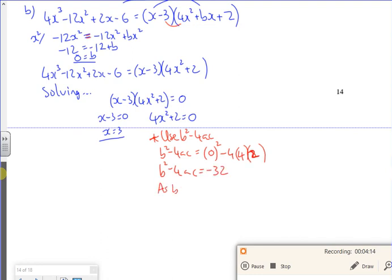So my b squared minus 4ac is minus 32. So as b squared minus 4ac is less than 0, there's no roots on the quadratic. I hope that makes sense. So that must be the only root.